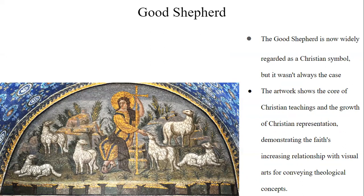The final Christian artwork to be discussed is the Good Shepherd. The concept of a shepherd caring for a flock, or carrying home a weak or missing lamb, originated in agrarian settings and has since become a powerful and positive image. The Good Shepherd is now widely regarded as a Christian symbol, but it wasn't always the case — Assyrians, Greeks, and Romans depicted Hermes as a shepherd holding a lamb. The artwork shows the core of Christian teachings and the growth of Christian representation, demonstrating the faith's increasing relationship with visual arts for conveying theological concepts, emphasizing the immense stature of Jesus Christ in mosaic form.